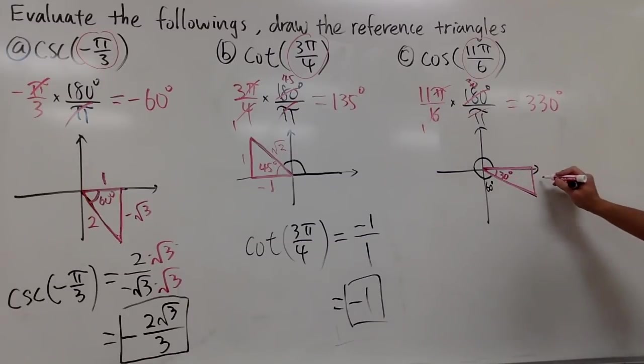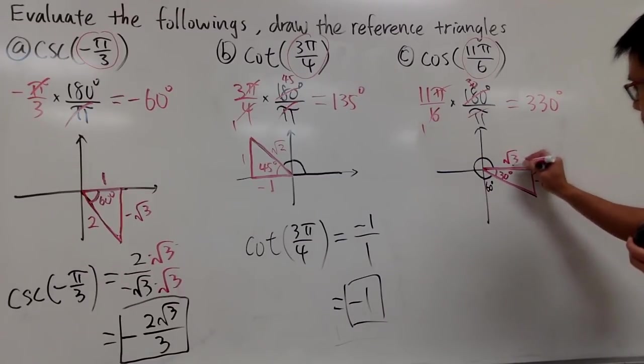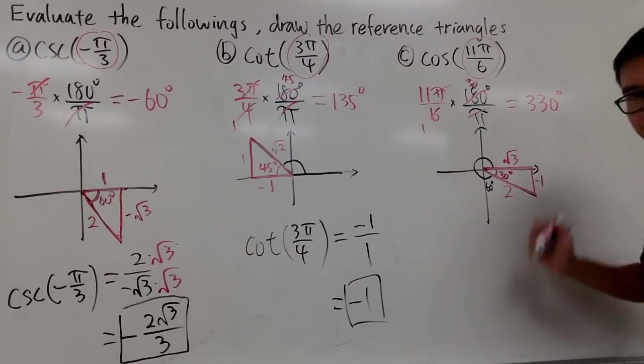30 degrees, you go away, this will be 1, but it's down below, so it's negative 1. This is 60 degrees, so this side is positive square root of 3 because it's on the right-hand side. Hypotenuse is 2. Look at this picture.